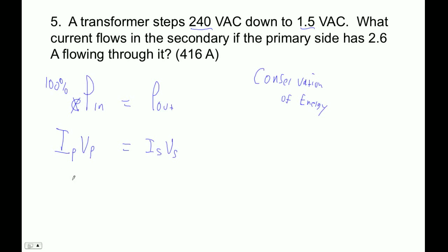Okay, so let's see. The primary side has 2.6 amps, right? And the voltage is 240, right? And then the secondary is some current. It's going to be a gigantic current, too, right? Because we're stepping the voltage way down to 1.5, right?